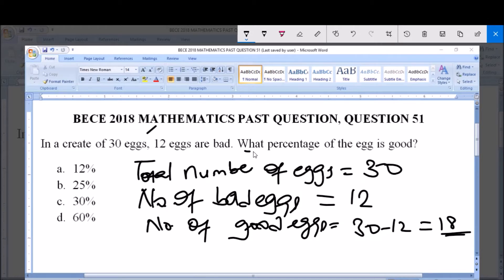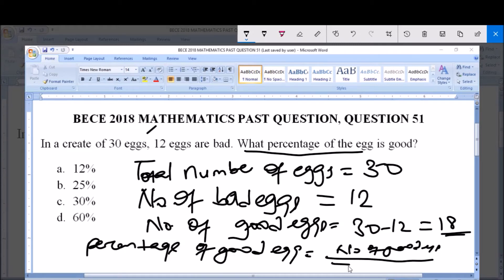But the question asks us to find the percentage of eggs that are good. So therefore, percentage of good eggs is equal to number of good eggs divided by total number of eggs times 100 to get the percentage.